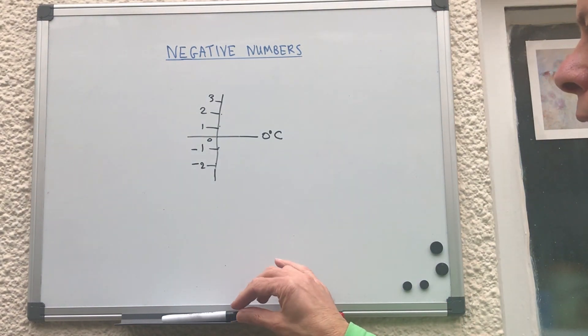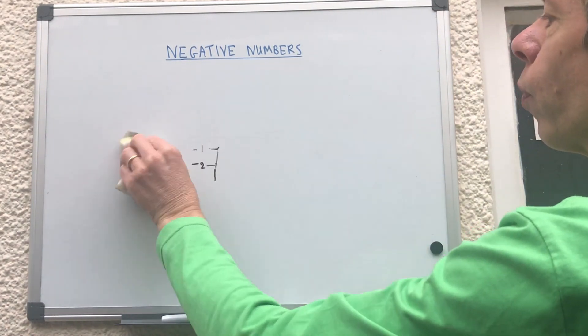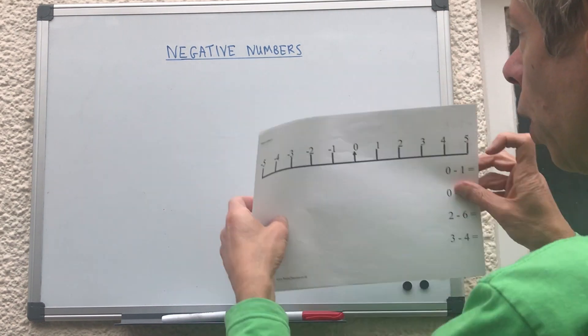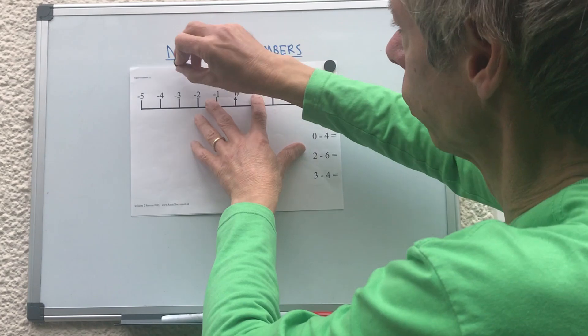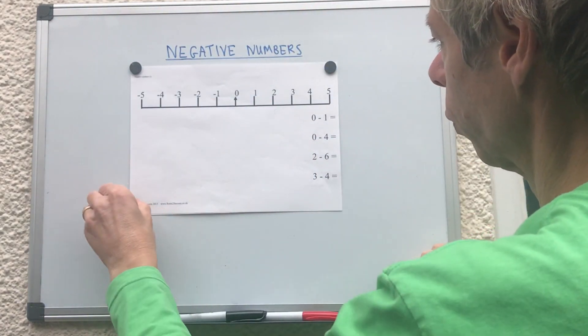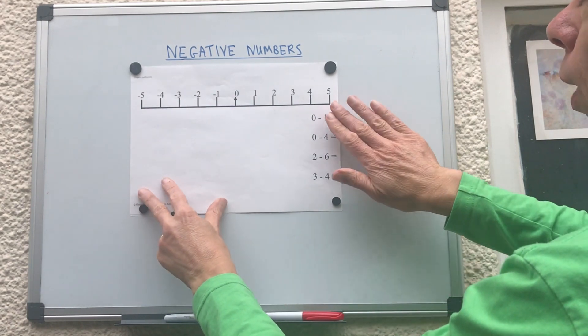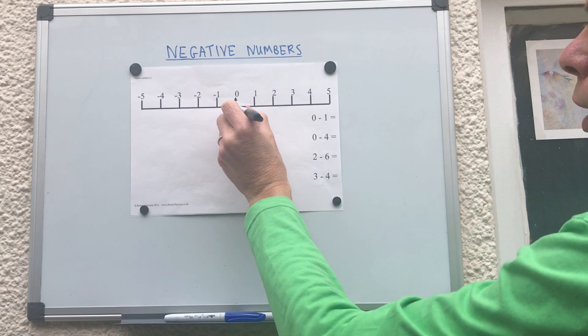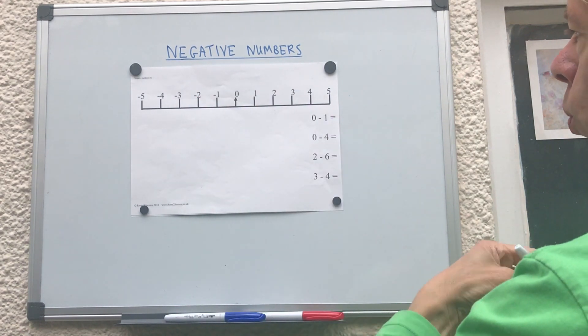Right, so negative numbers, the best way I think to explain them, if we look at these little charts here. So if we're trying to work out zero take away one, start at zero, go back one step, zero take away one is minus one.